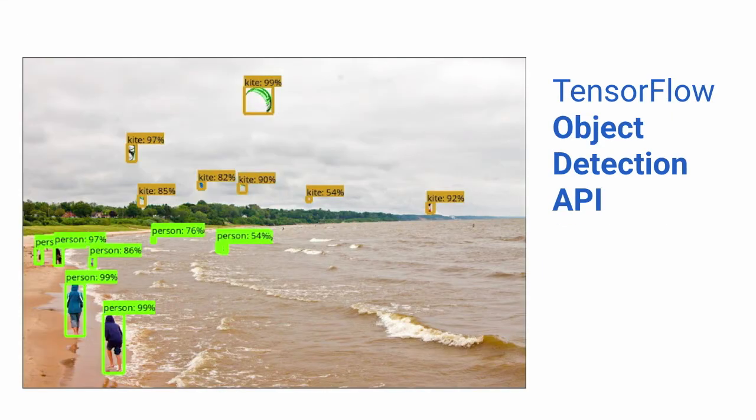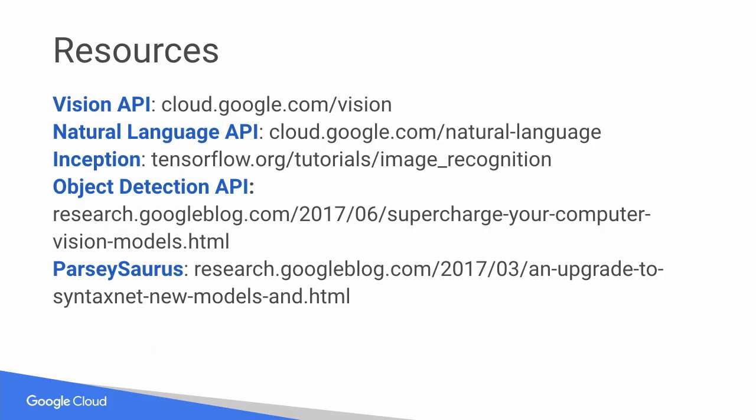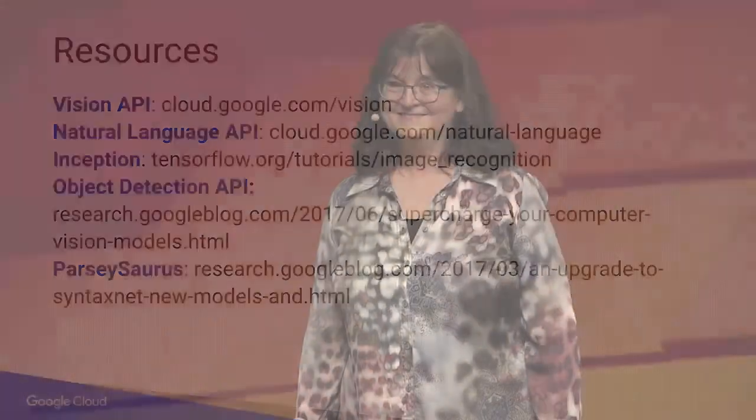I'll close with a quick call-out to the TensorFlow Object Detection API, just open-sourced a couple of weeks ago — look for the very interesting blog post on this. I've just scratched the surface, but I hope this gave you a sense of the different ways that you can use machine learning on Google Cloud Platform. Thank you.